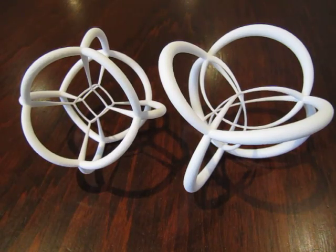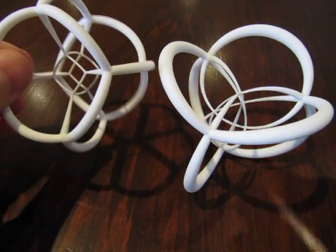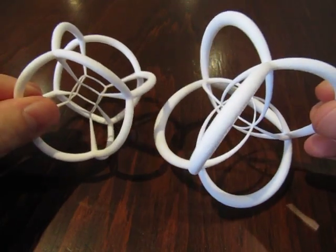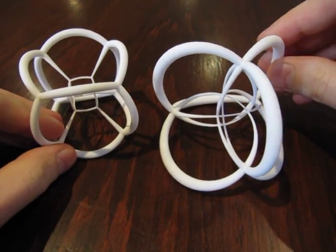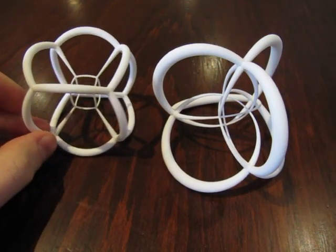Hi, my name is Henry Segeman. This is the tesseract and the 16-cell. These are both examples of four-dimensional polytopes, or polycorons.